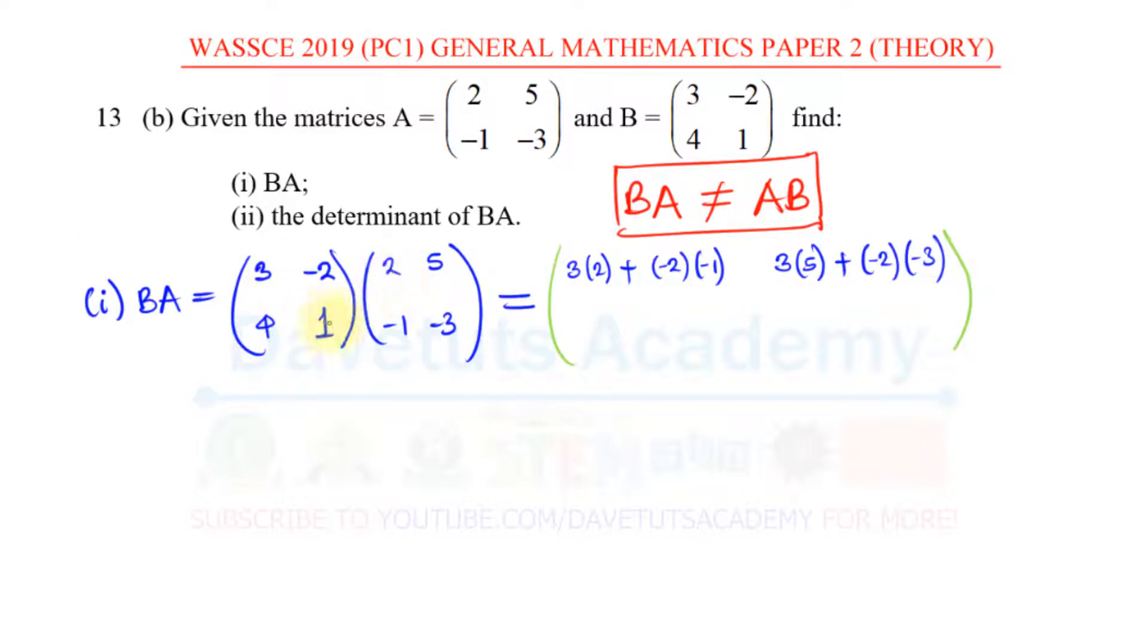And then we will go to the second row now, 4, 1 and multiply it with these columns. We are going to have 4 times 2, plus 1 times minus 1, and then again, 4 times 5, plus 1 times minus 3. Now, look at the symmetry of what we have here. We have 2, minus 1, 5, minus 3. But here we have 3, minus 2, and we have 4, 1. That is the symmetry you should watch out for whenever you are carrying out multiplication of matrices so that you will know and ensure that you are on the right track.